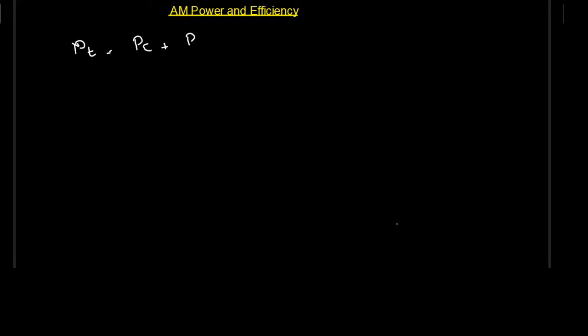In this lecture we are going to talk about the power and efficiency of amplitude modulation. This topic is given by sideband and carrier power. The transmitted power of amplitude modulation is equal to P_t, which is equal to the carrier power plus P_s, where s denotes the sideband. So the total power equals the carrier power and the power of the sidebands — the upper sideband and lower sideband.